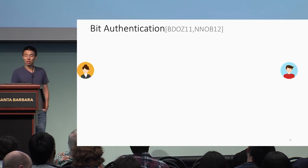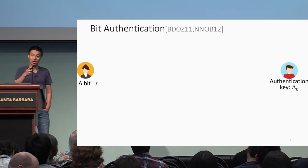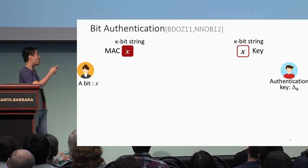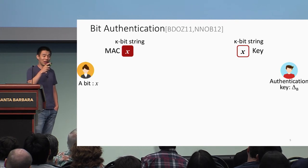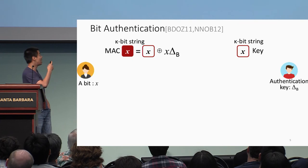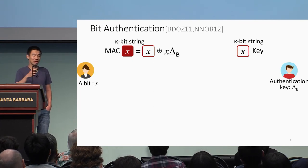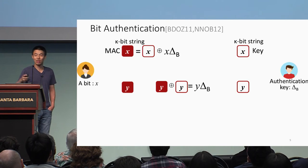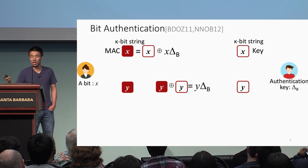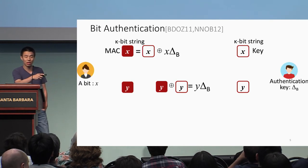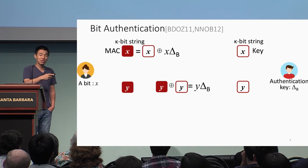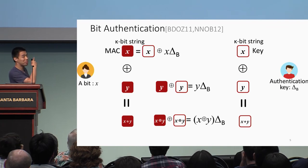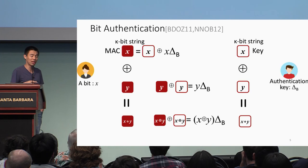Let's start with bit authentication. Alice has a bit X and Bob has the authentication key delta_B. To authenticate a bit, Bob has a MAC key and Alice has a MAC on this bit. The relationship is that the MAC equals the key if X is zero, and differs by delta_B if the bit is one. If we want to authenticate another bit, we do the same thing with the same global authentication key. The consistency of this global authentication key gives us XOR homomorphism: if we have MACs on two bits, we can compute their XOR locally without any interaction.